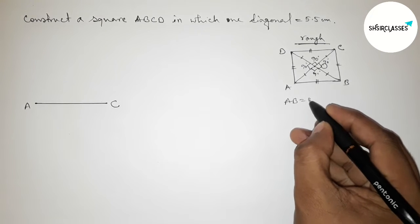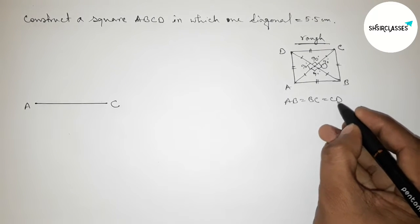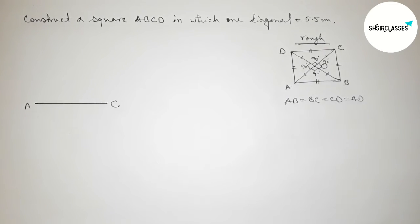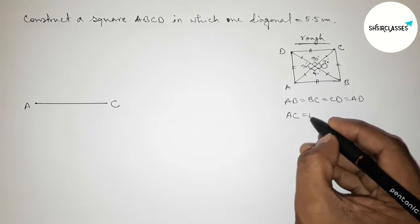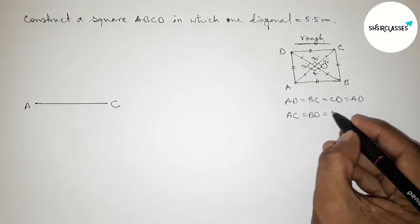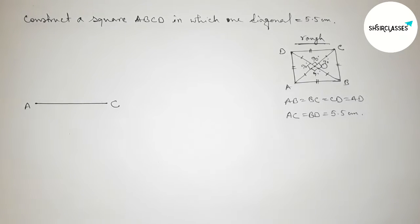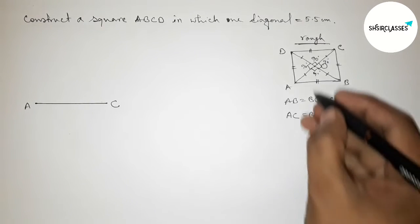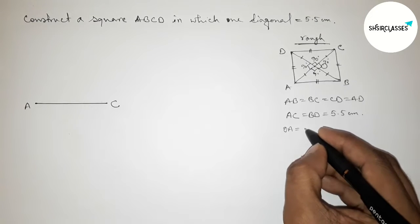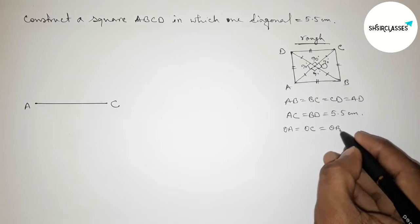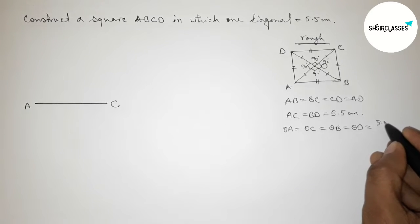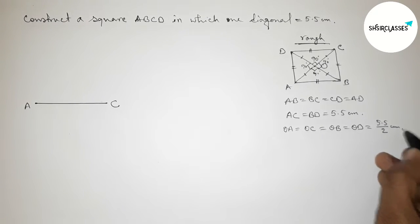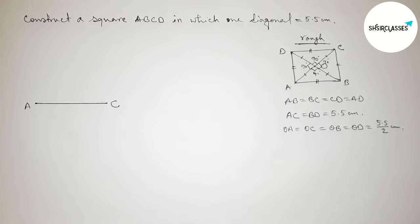The two diagonals of a square are also equal. Since OA and OC are equal, and OB and OD are equal, the length OA equals OC equals 5.5 divided by 2 centimeters. Now I am going to apply this concept.